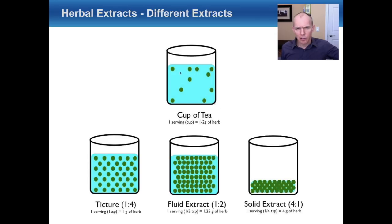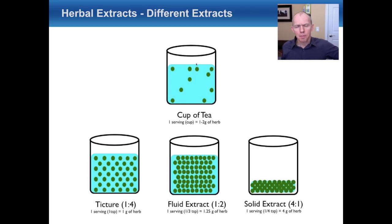The images here illustrate concentration: blue represents water and the green dots represent the active phytochemicals. A cup of tea is not nearly as concentrated as a tincture, which is a one-to-four extract, or a fluid extract, which is a one-to-two extract, or a solid extract at a four-to-one ratio. Depending on which you choose, you may drink an entire cup of herbal tea or need only a quarter teaspoon of solid extract to get the same number of phytochemicals.